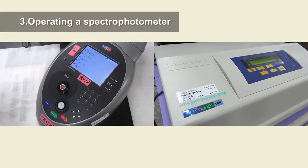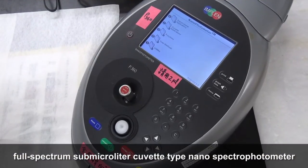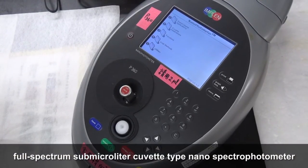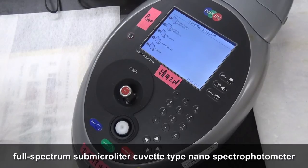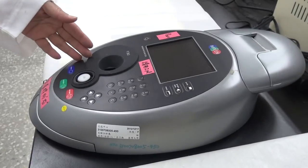3. Operating a spectrophotometer. A. Now we demonstrate how to operate a full-spectrum sub-microliter cuvette-type nano-spectrophotometer. 1. Remove the dust cover and make sure the cuvette holder is empty.